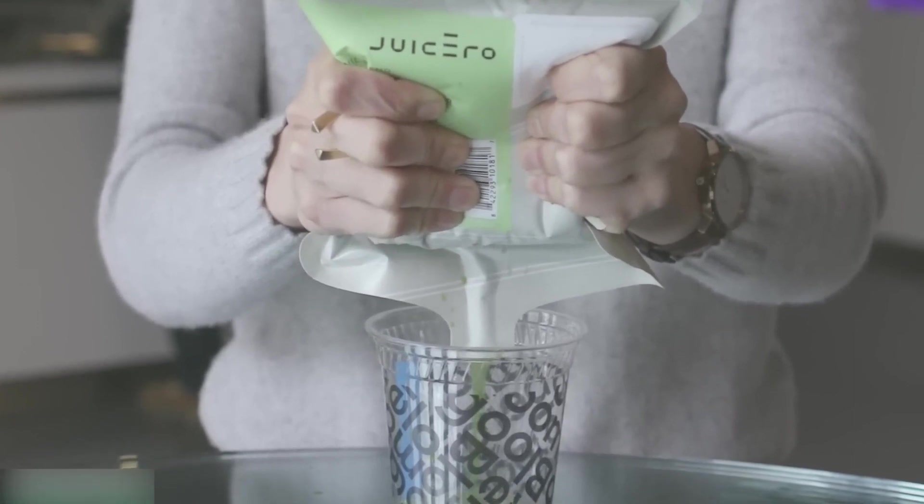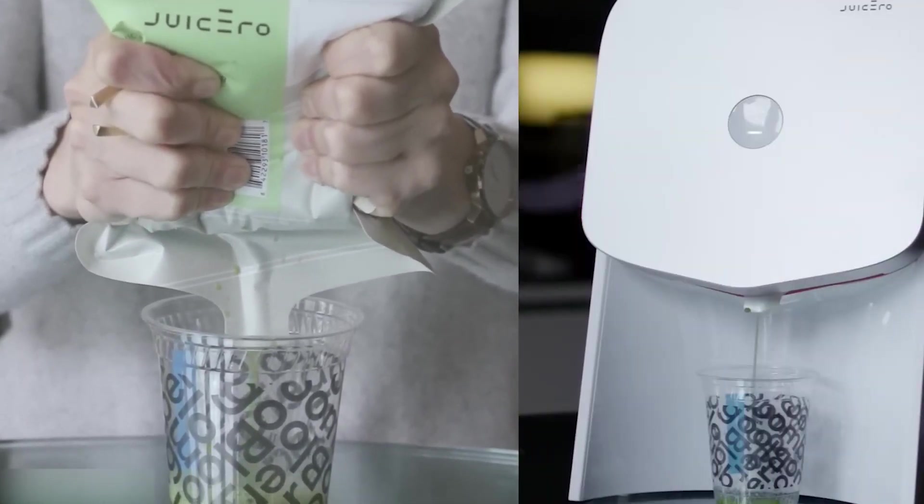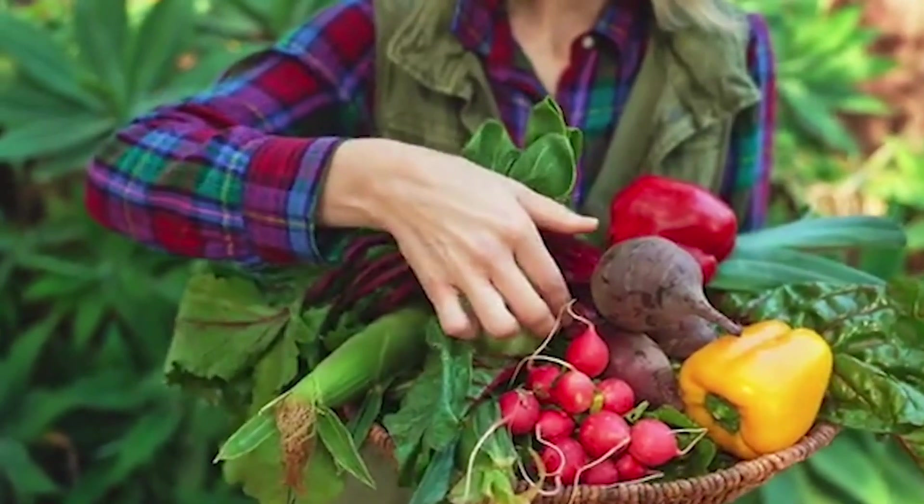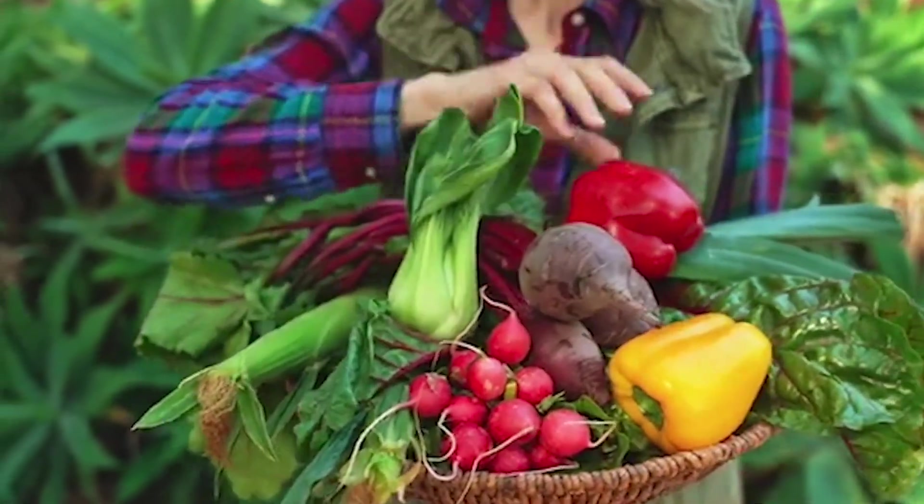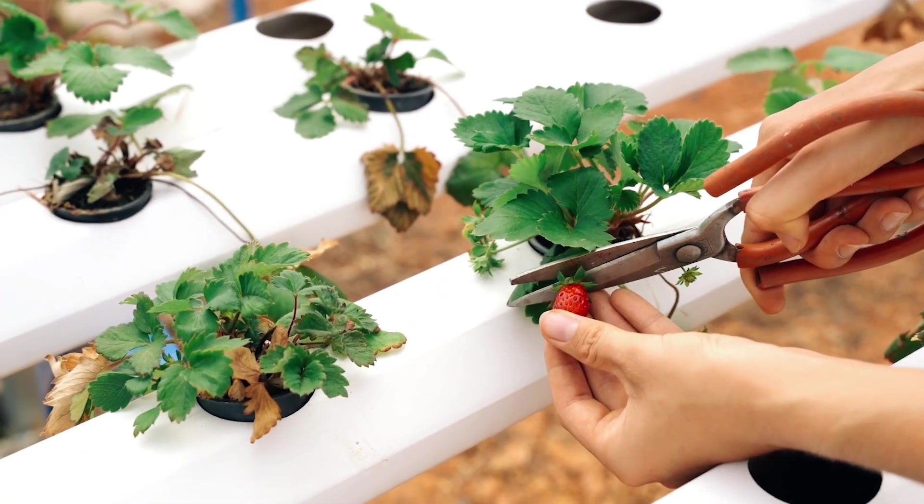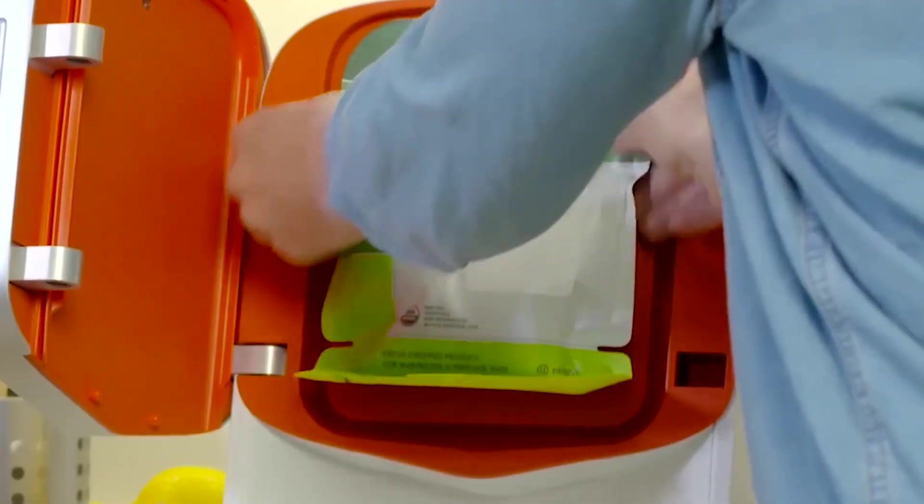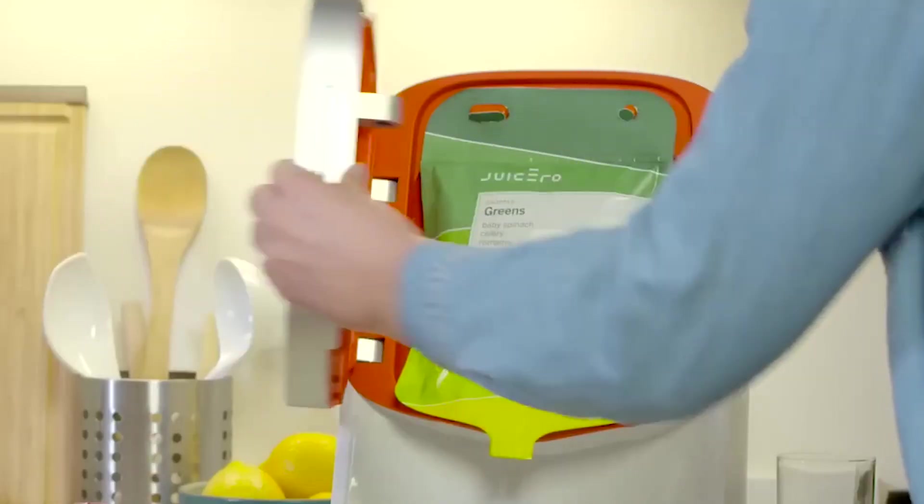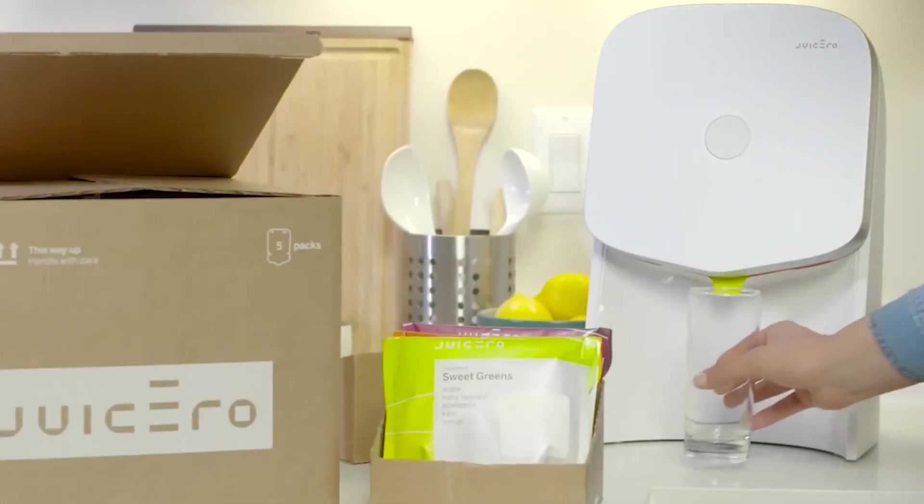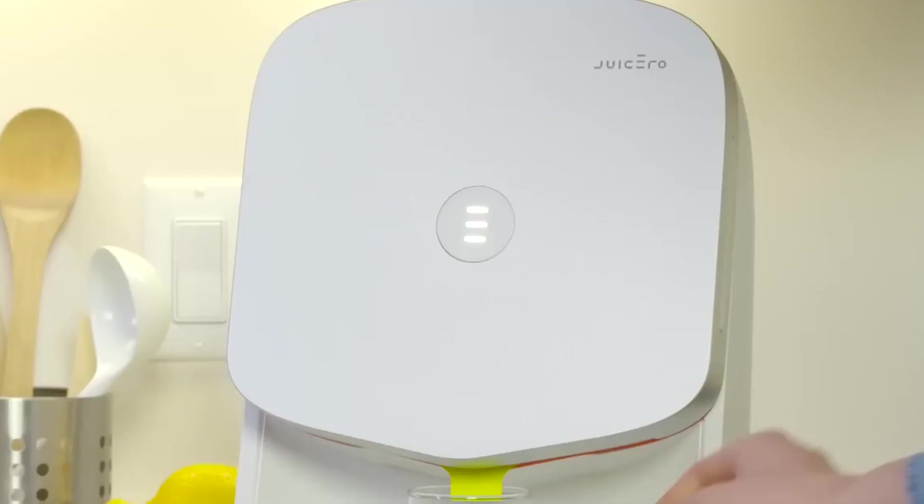Juicero burst onto the scene with an ambitious goal to revolutionize the way people enjoy fresh juice. They took care of the hard work by preparing and packaging organic produce into single serve packets, eliminating the need for manual prep. They introduced a cutting edge juice press that squeezed out the juice from those packets with just a press of a button, making the whole process incredibly convenient.